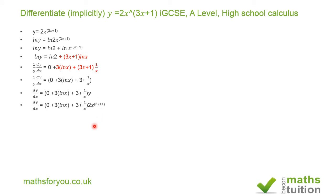So now we end up with dy/dx equals 3 times natural log of x plus 3 plus 1 over x, all multiplied by 2x raised to the power 3x plus 1. We don't need the 0, so our final answer is dy/dx equals 3 times the natural log of x plus 3 plus 1 over x, all multiplied by 2 times x raised to the power 3x plus 1. I hope that made sense — please subscribe, thank you for watching, bye bye.